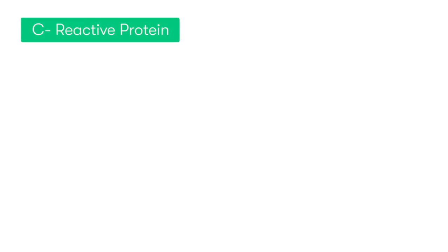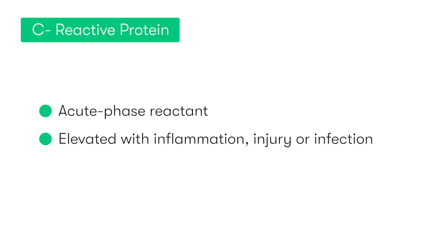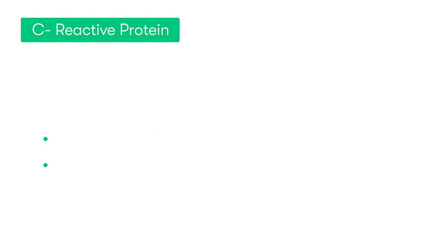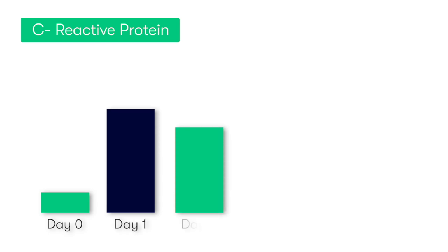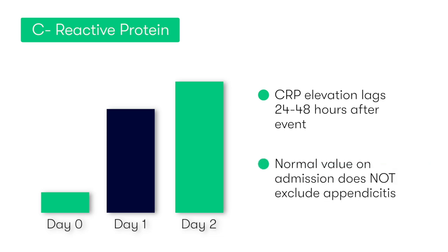The next blood test is C-reactive protein, or CRP — an acute phase reactant produced in the liver and released several hours after the onset of inflammation, injury, or infection. In the patient with appendicitis we would expect the CRP to become elevated. However, it's important to remember that this rise lags between 24 to 48 hours after the onset of symptoms. So just because the patient has a relatively normal CRP on admission, this does not mean they don't have appendicitis — you could recheck the CRP the next day and it may have shot up completely.